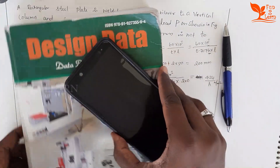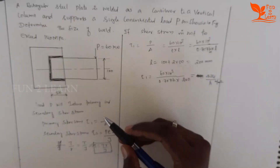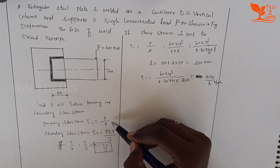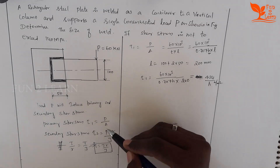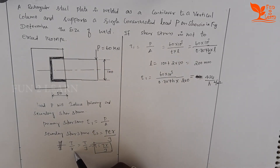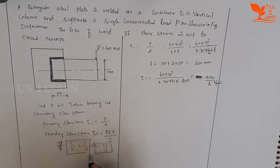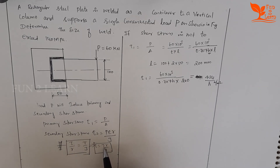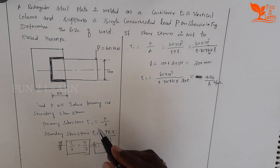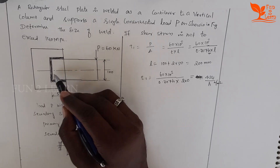The primary shear formula is Load divided by Area — this does not change. The secondary shear formula comes from the shear equation: τ/R = T/J. From this equation, τ (Tau) equals T×R divided by J, where T is the torque (load × eccentricity radius).